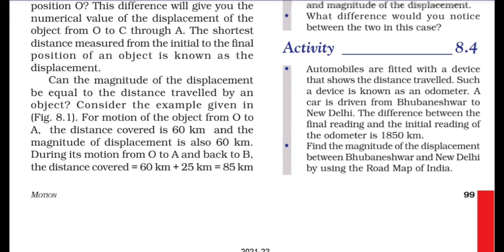The shortest distance between the initial point and the final point is the displacement. The actual path traveled by the object is the distance.